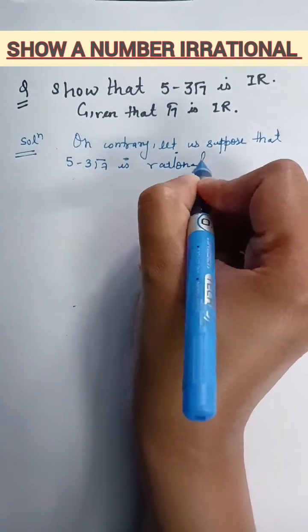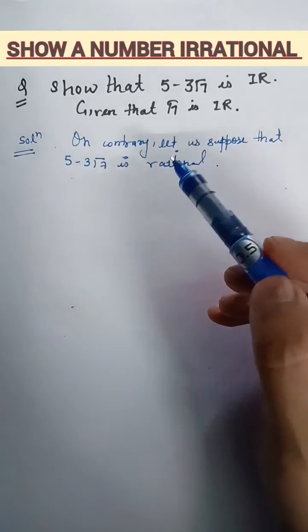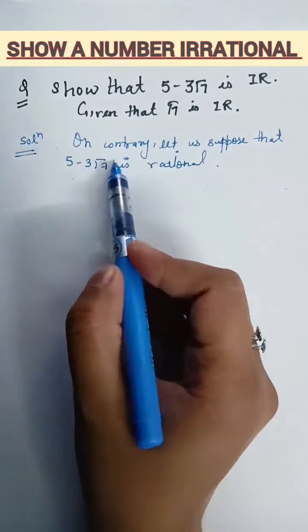Whenever you get question in exam to show a given number irrational, you will suppose it as rational. If you have to suppose it as rational, you know that rational is in the form of p by q.